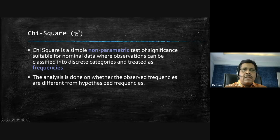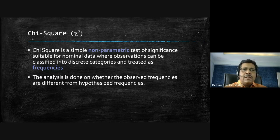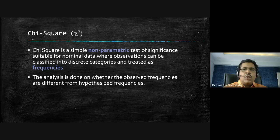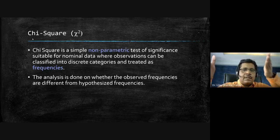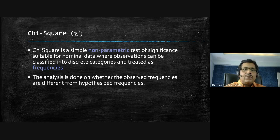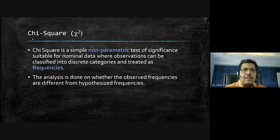Chi-square is written using the Greek letter χ and pronounced with a 'K' sound. It is a simple non-parametric test of significance suitable for nominal data where observations can be classified into frequencies. It is used to find out whether observed frequencies differ from hypothesized (expected) frequencies.